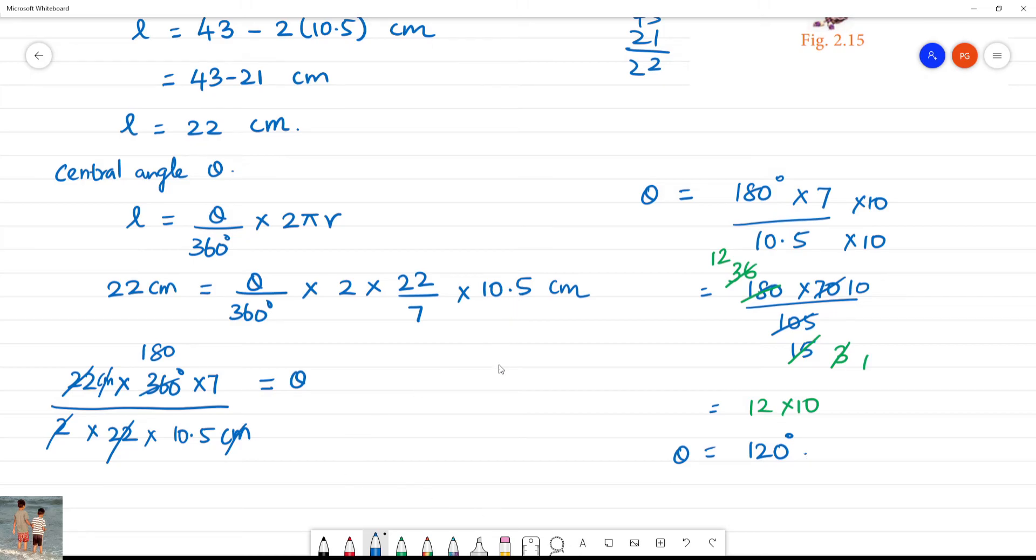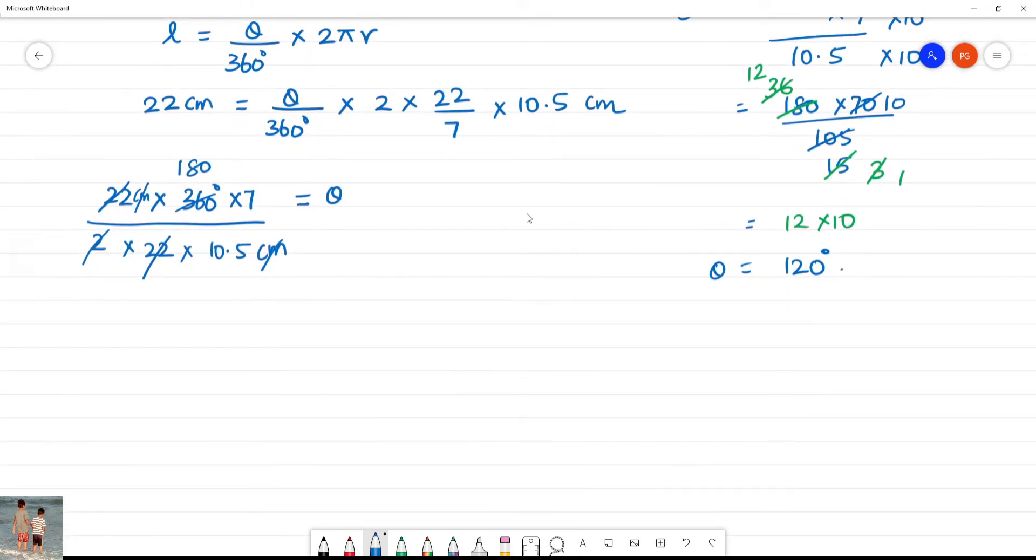Next, area of the sector. Area of sector is equal to theta by 360 into pi r square. Theta is equal to 120 degree by 360 degree into 22 by 7 multiplied by 10.5 into 10.5 square centimeter.